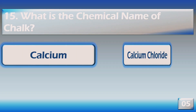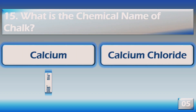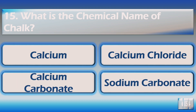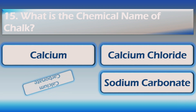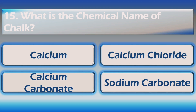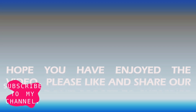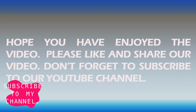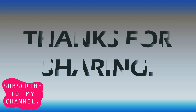What is the chemical name of chalk? It is calcium carbonate. Hope you have enjoyed the video. Don't forget to share your scores and comment, and do like, share, and subscribe to our YouTube channel for more content. Thank you so much for watching.